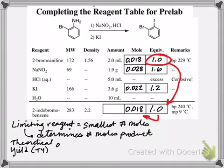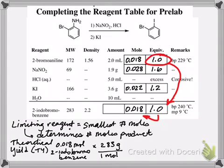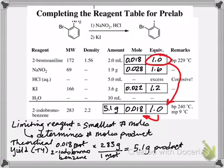So for the theoretical yield, we have 18 millimoles of 2-iodobromobenzene, and we can use the molar mass of that. We can multiply by 283 grams for every one mole, and we're going to multiply so that we can get our moles to cancel, and it's going to come out to 5.1 grams of the product. That's our theoretical yield. So we can put that on our table, and now when we run the reaction and we isolate our product and we find out how much we get, we can compare that to the theoretical yield to calculate the percent yield for our reaction.